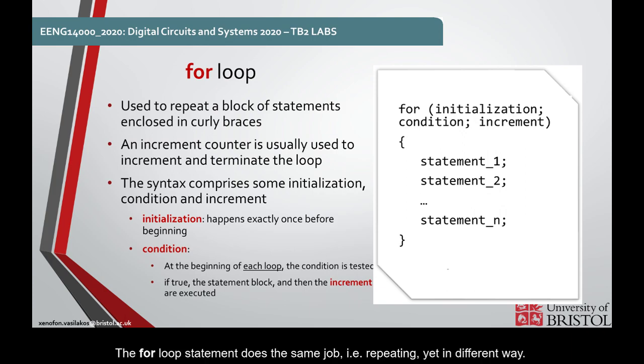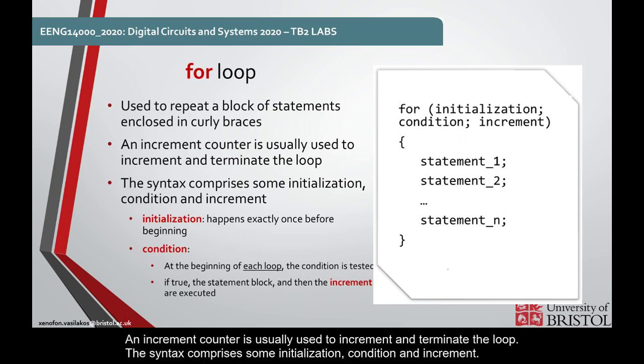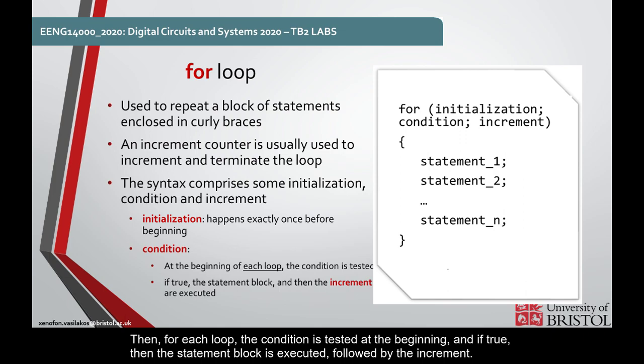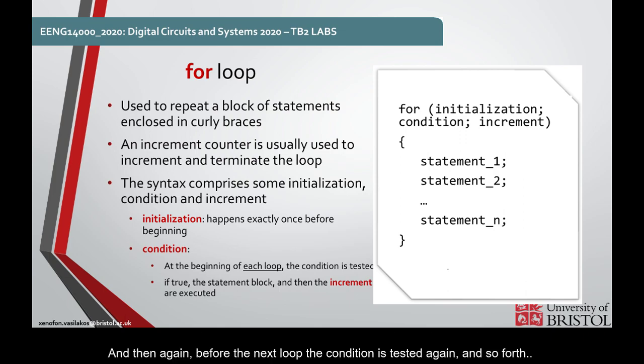A for loop statement does the same job, this means repeating, yet in a different way. An increment counter is usually used to increment and terminate a loop. The syntax comprises some initialization, condition, and increment. The initialization happens exactly once before entering the for's code. Then, for each loop, the condition is tested at the beginning. And if true, then the statement block is executed, followed by the increment. And then again, before the next loop, the condition is tested again, and so forth.